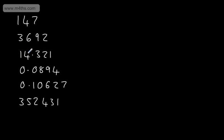If we look at 14.321, the first significant figure is tens — so if I wanted to round this to one significant figure, I'd round to the nearest ten. The second significant figure is units, so if I rounded to two significant figures, I'd round it to the nearest one.